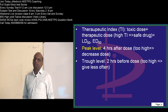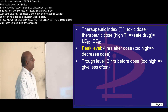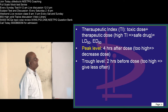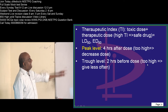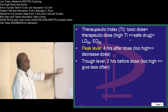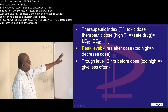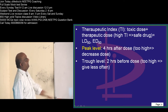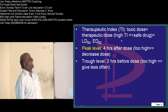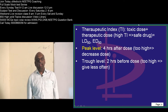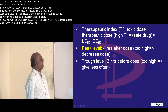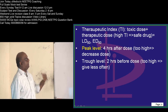Therapeutic index: the toxic dose divided by the therapeutic dose gives you the therapeutic index. The higher it is, the safer the drug.